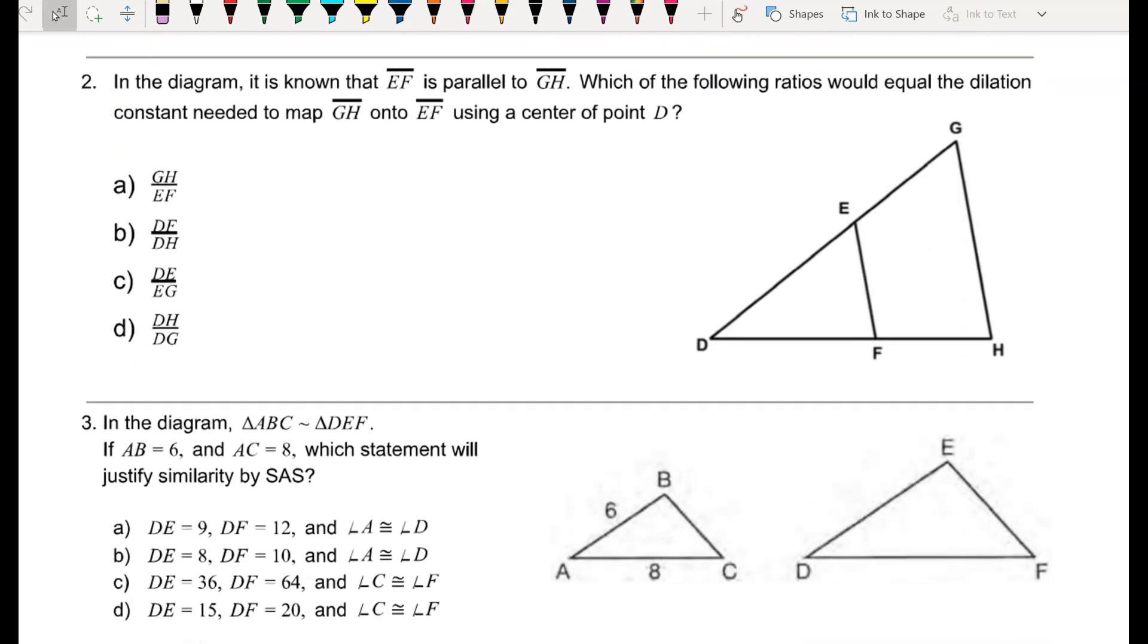Number 2. In the diagram, it is known that EF is parallel to GH. So again, we're working with some similar triangles here because we have those corresponding angles. And it says, which of the following ratios would equal the dilation constant needed to map GH onto EF? So one thing you have to recognize here is that we're getting smaller.